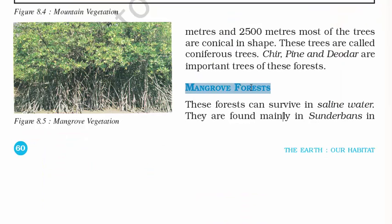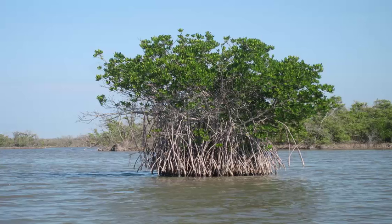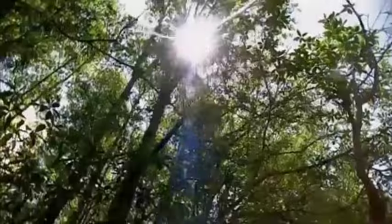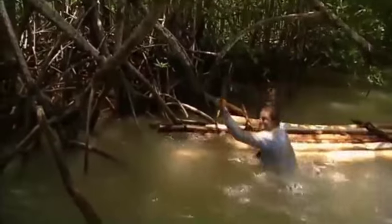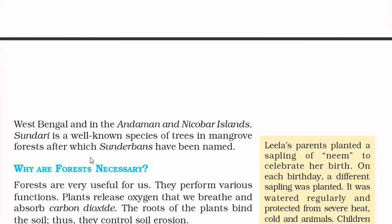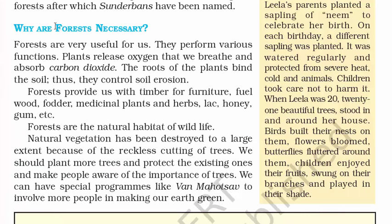The last type of vegetation is mangrove forests. These forests can survive in saline water — that is, salty water. Mangroves are trees or shrubs that grow in saline water, usually found near coastal areas in places like the Andaman and Nicobar Islands. The most important role of mangroves is that they protect coastlines from wave action because they hold the soil together.